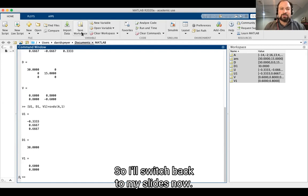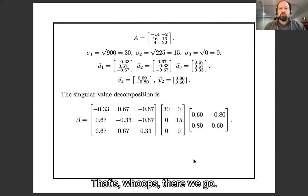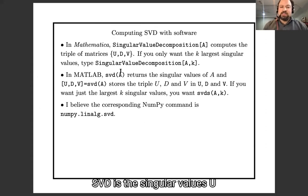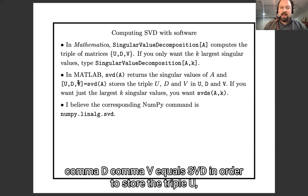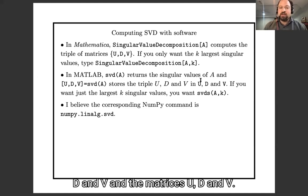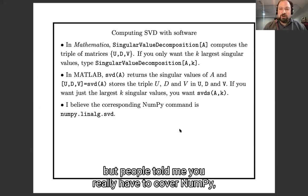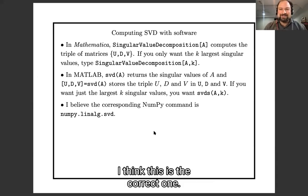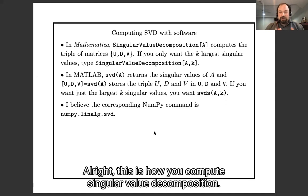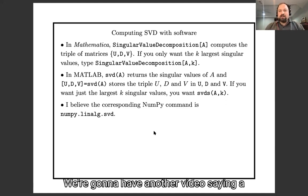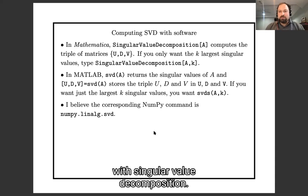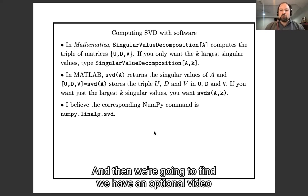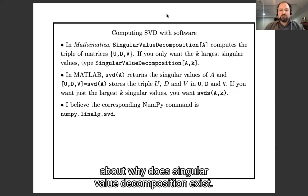So I'll switch back to my slides now. SVD is the singular values. U, D, V equals SVD in order to store the triple U, D, and V in the matrices U, D, and V. And if you just want the K singular values, that's SVDS, AK. And again, I don't use NumPy, but people told me you really have to cover NumPy. I think this is the correct command. All right. This is how you compute singular value decomposition. We're going to have another video saying a little bit about what you do with singular value decomposition. And then we're going to finally have an optional video about why does singular value decomposition exist. For now, I will stop here.